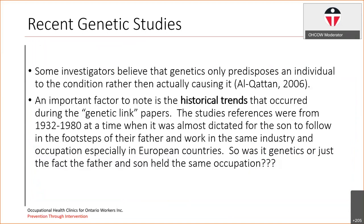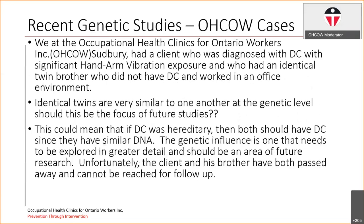Some investigators believe that genetics may only predispose an individual to the condition rather than causing it. One of the most important things overlooked in older studies done between 1932 and 1980 was a historical trend and societal norm: historically it was almost dictated that the son would follow in the footsteps of their father and work and apprentice in the same industry, especially in European countries. So was it genetics, or was it just the fact that the father and the son had the same occupation and therefore the same occupational exposures?